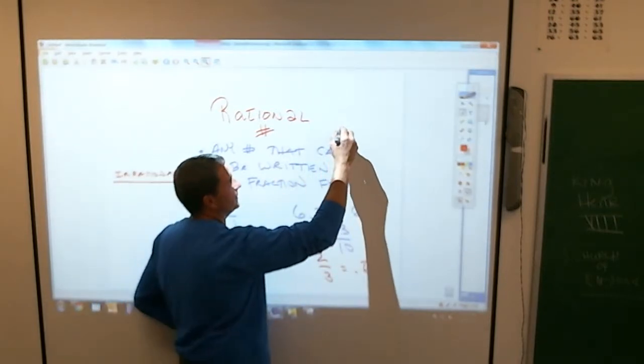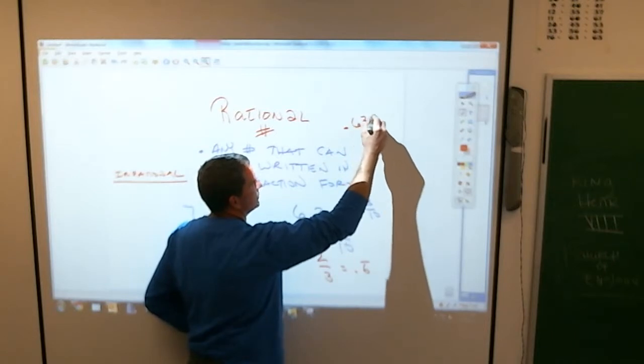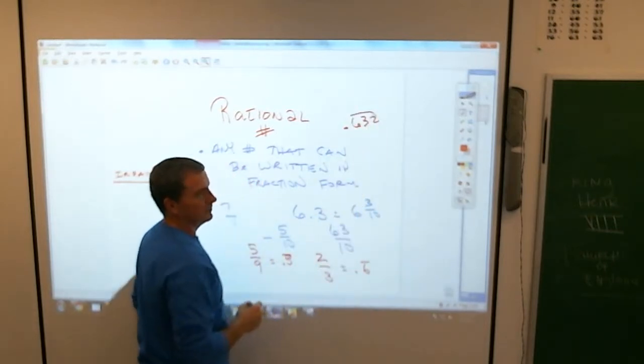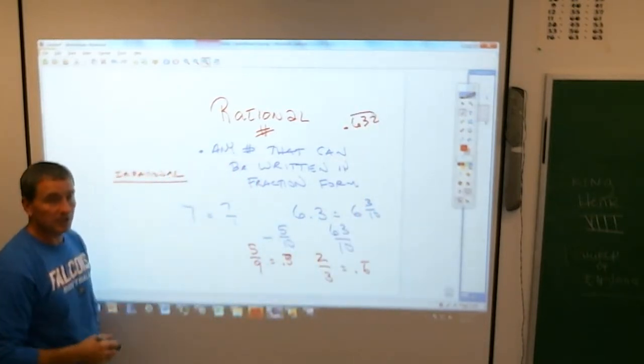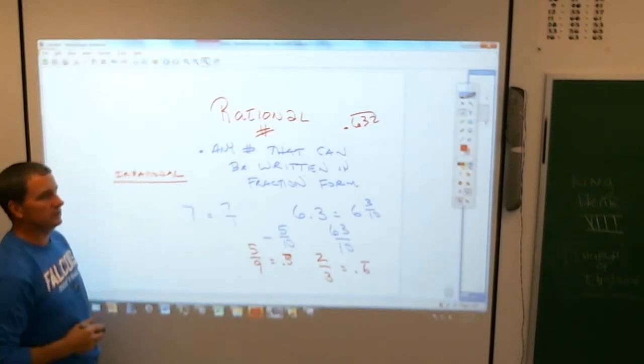If you came up with the number 0.632 with a line above it, is it a rational number? It is, because at some point, somewhere, you can make it a rational number.